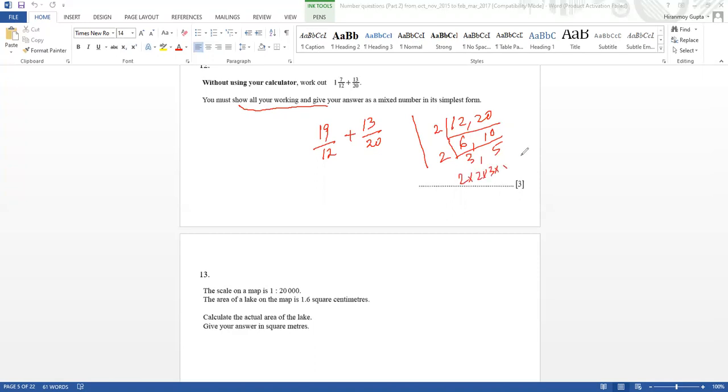2, 6, 12, 10... 2, 3, 2, 5. So LCM will be 2 times 2 times 3 times 5, which is 60. So LCM is always 60. 12 fives are 60, so 19 times 5, how much? 95. And 20 times 3 is 30, so 13 times 3 is how much? 39.